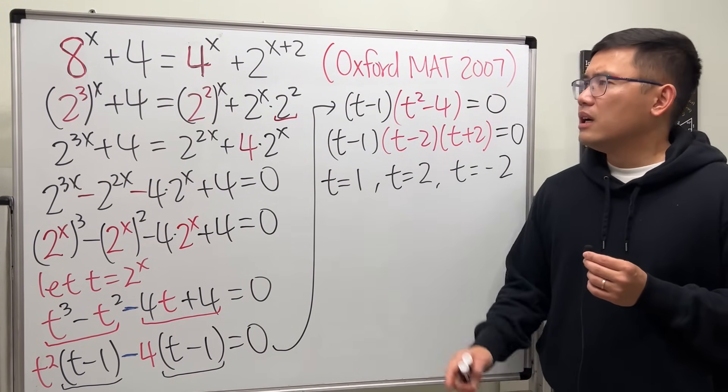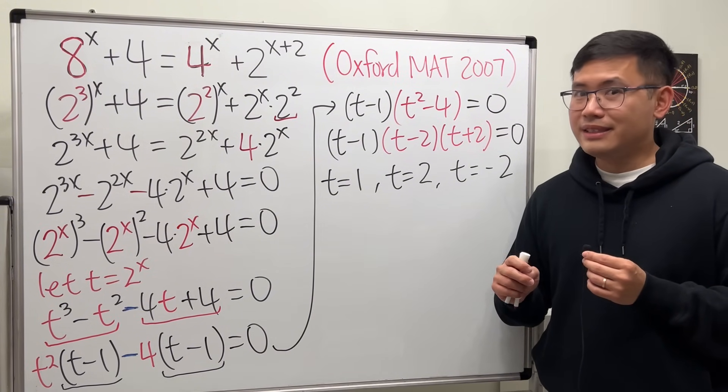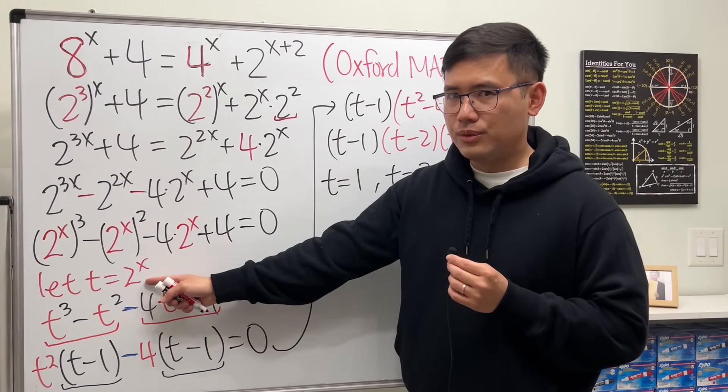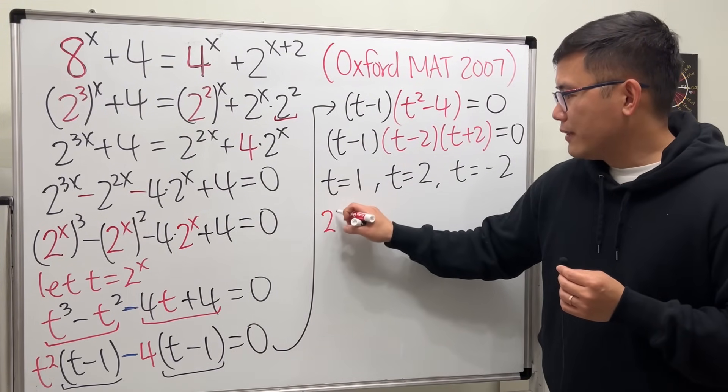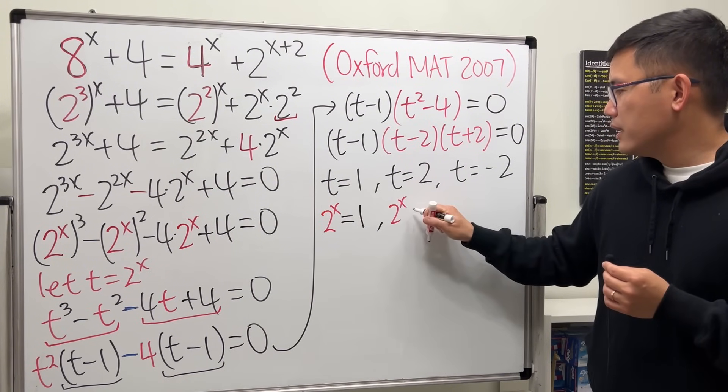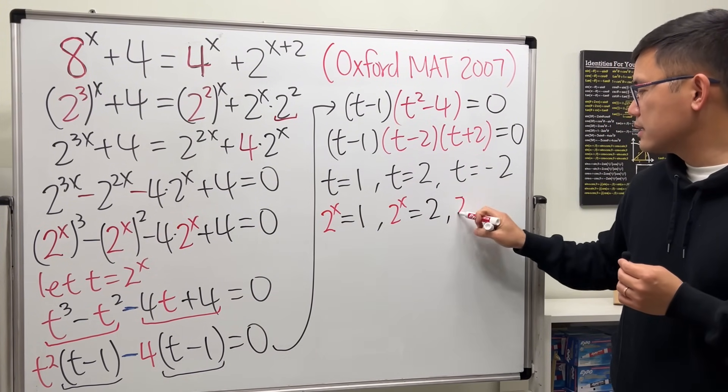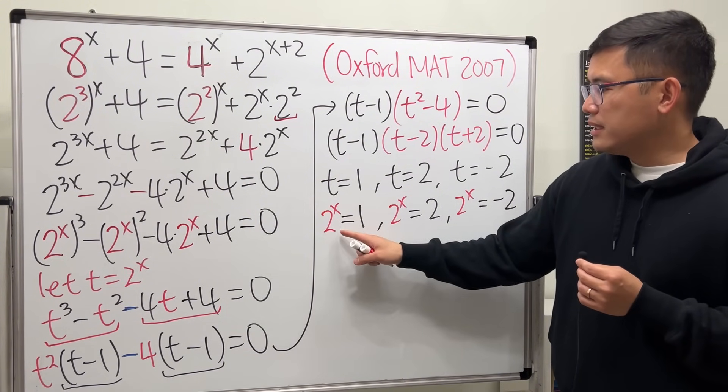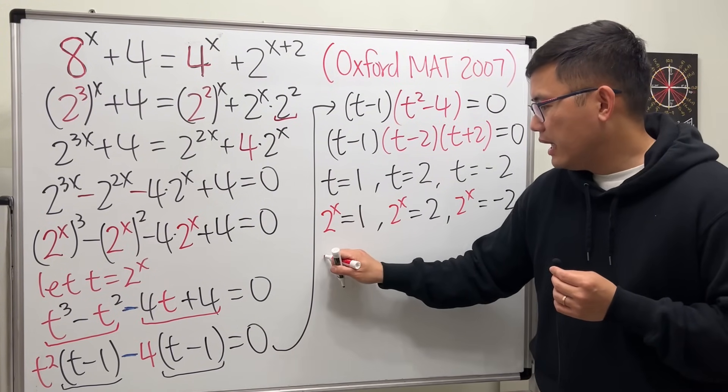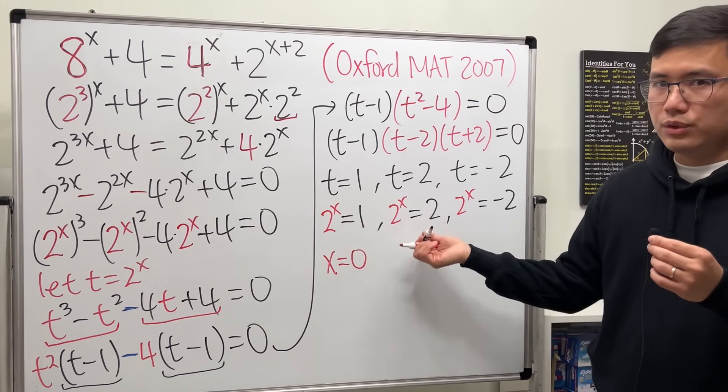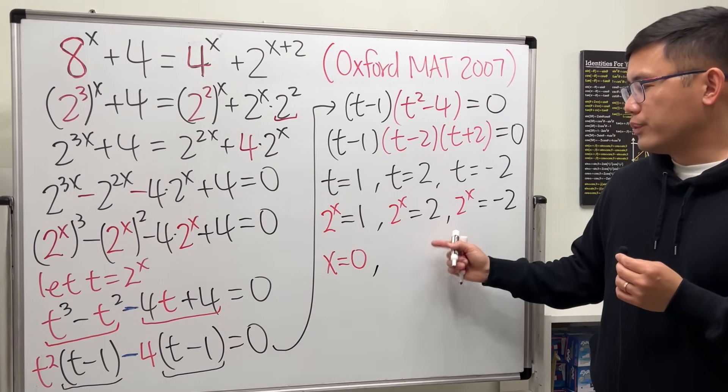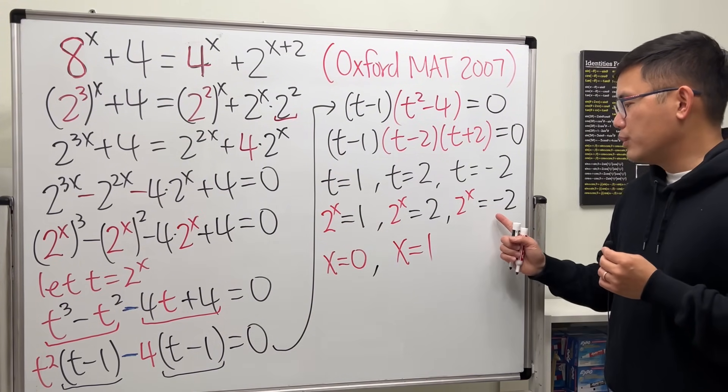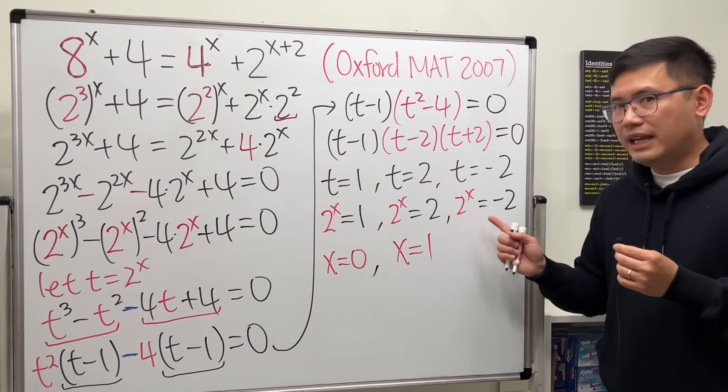But why did I say the answer was 2? Yes, be careful with it. Right here, we are not solving for t. We ideally want the x. t is 2 to the x. So, we have 2 to the x equals 1, 2 to the x equals 2, and then 2 to the x equals negative 2. For this right here, 2 to what power is equal to 1? The answer for that is, x has to be equal to 0. 2 to the 0 is equal to 1. That's the only choice. 2 to what power is equal to 2? Well, 2 to the 1st power is equal to 2. So, x is equal to 1. But, 2 to the x is equal to negative 2.